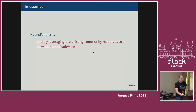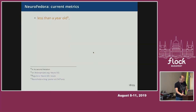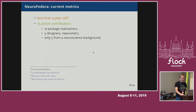What we have been doing is leveraging some community resources to this new domain, and taking the community model of free open source to neuroscience research. Less than a year old in its second iteration, it's really been great seeing it come alive. We've got 15 active contributors, 10 package maintainers, five designers and newcomers. There's a core of us with neuroscience background, both computational and neuroimaging. And we've got 105 packages ready to install today.